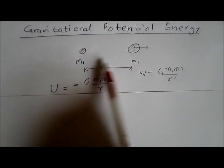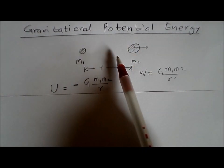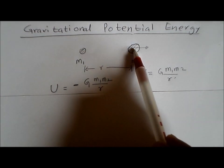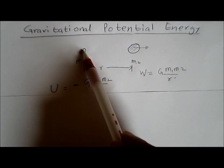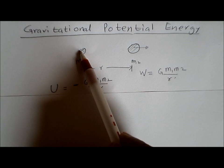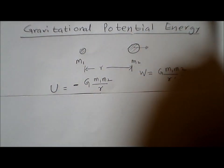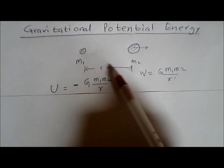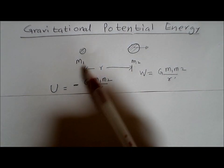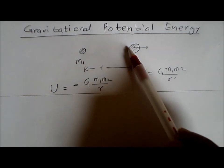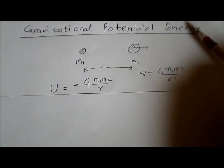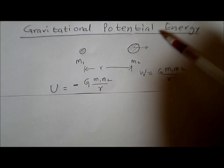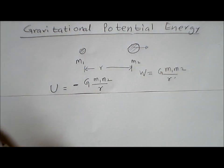There is a force of attraction between these two masses. Let's say one mass is fixed at the origin and the other mass is brought from infinity to a point at a distance r from m1. Now since there is a force of attraction, we don't have to do any work — in fact we will get work, as the mass is automatically being pulled in.